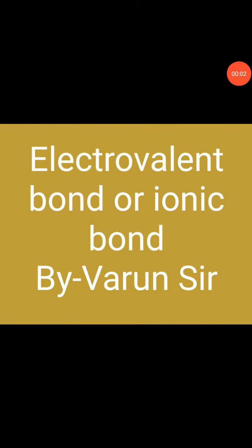My name is Varun Kumar. This video is for 11th class, chapter name: Chemical Bonding and Molecular Structure, topic: Electrovalent Bond or Ionic Bond. The chemical bond formed between two or more atoms as a result of the transfer of one or more electrons from an electropositive to an electronegative atom is called an electrovalent bond. This bond is also called an ionic or polar bond.